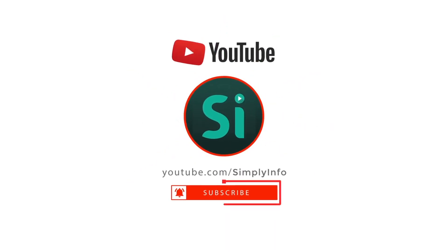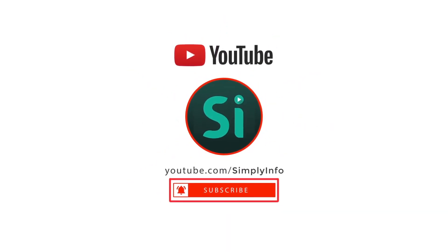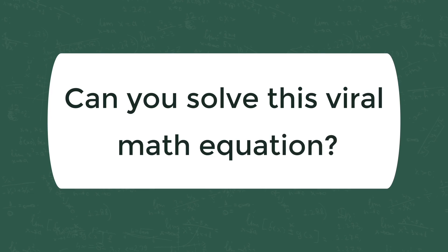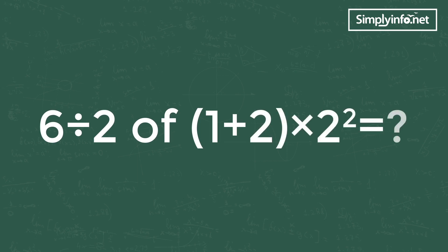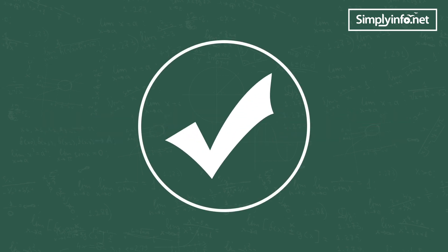Please subscribe for more videos and click the bell icon for updates. Can you solve this viral math equation: 6 divided by 2 of (1 + 2) multiplied by 2²? The answer is yes if you know the BODMAS rule.